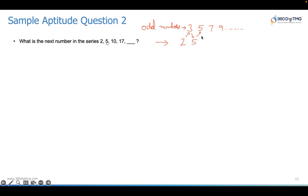To this five, if you add this five, you're going to get 10. That's here. To this 10, if you add seven, you get 17. So on and so forth. So 17 plus nine would give you the next number, which happens to be 26.